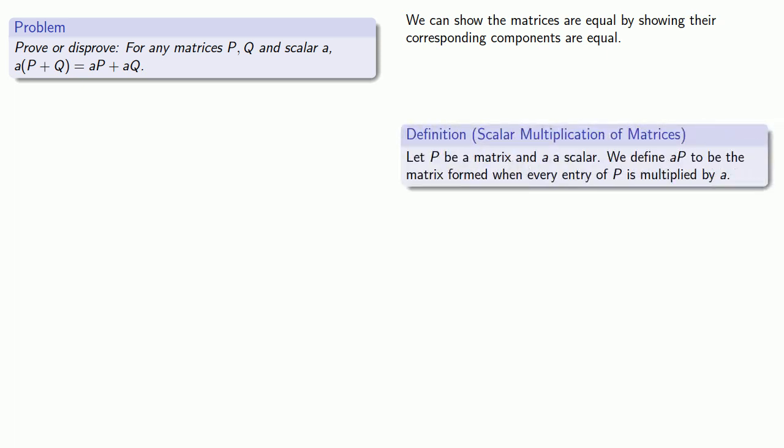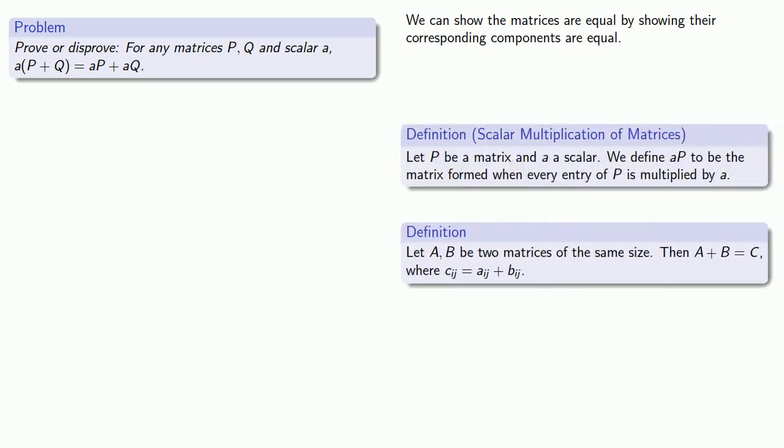But there is one thing that's different about this problem than the previous problem. I can multiply any matrix by any scalar that I want to and that's not an issue. However, I can't always add two matrices. And it's possible that this sum P + Q or aP + aQ is actually undefined. We might not actually be able to add the two matrices. Fortunately, we can invoke a rule of logic. Everything is true about nothing. For example, nothing is odd and even, and this is a true statement.